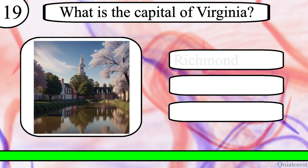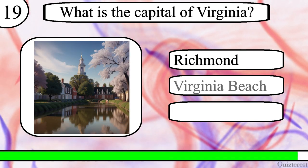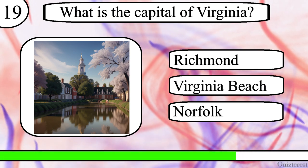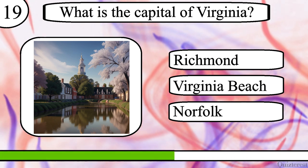Question 18. What is the capital of Virginia? Richmond, Virginia Beach, or Norfolk?